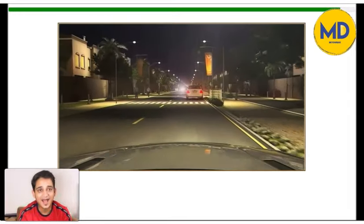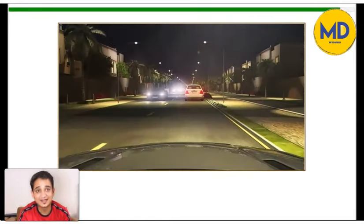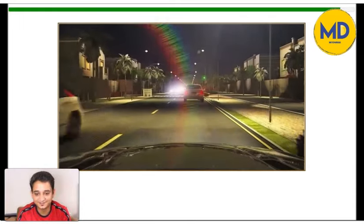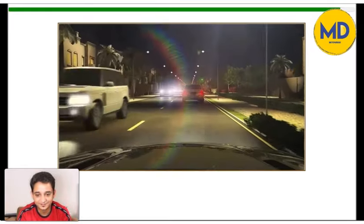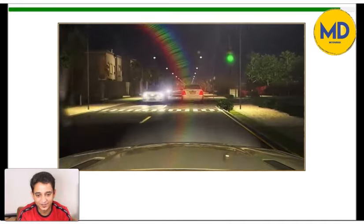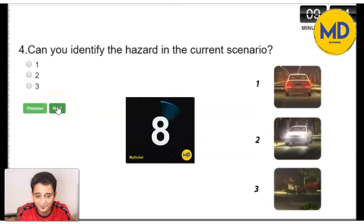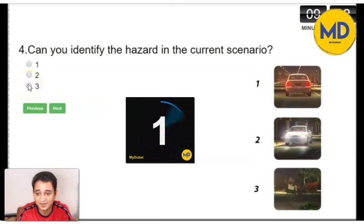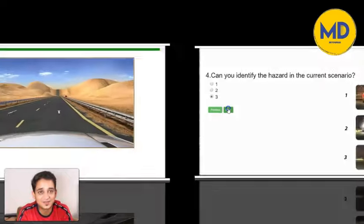Let's go to the next video. Here's another tip: if you cannot recognize the hazard, try to remember these answers, as these are the same questions which will come in your RTA Theory Test. Or even if you can't remember, try to at least answer within 10 seconds. In this video, you can see there is a cyclist coming from your right hand side trying to cross the road. The right option is number 3. That's correct if you chose it.